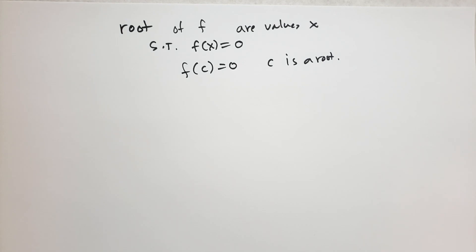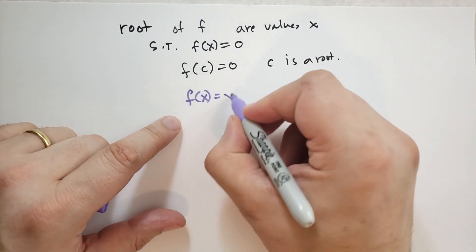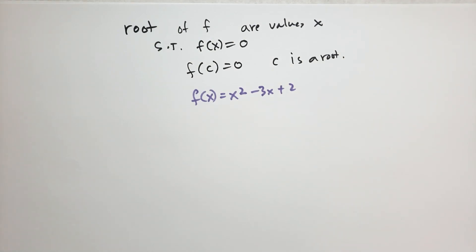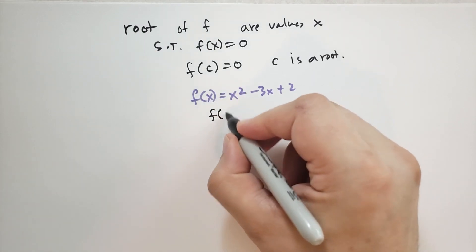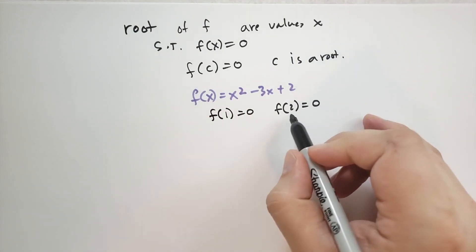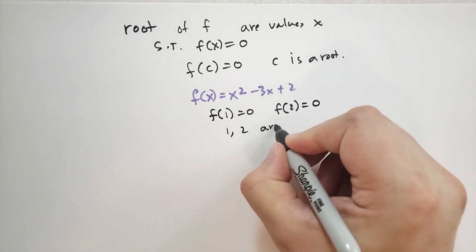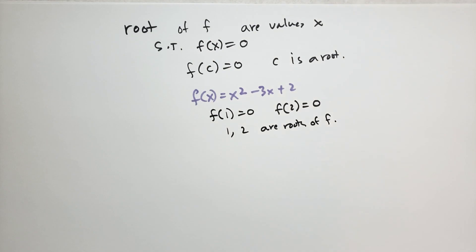Let's give some examples of roots. Let f(x) = x² − 3x + 2. We can find the roots rather trivially: f(1) = 1 − 3 + 2 = 0, and f(2) = 4 − 6 + 2 = 0. So 1 and 2 are both roots of f, because those particular values make the function equal zero.